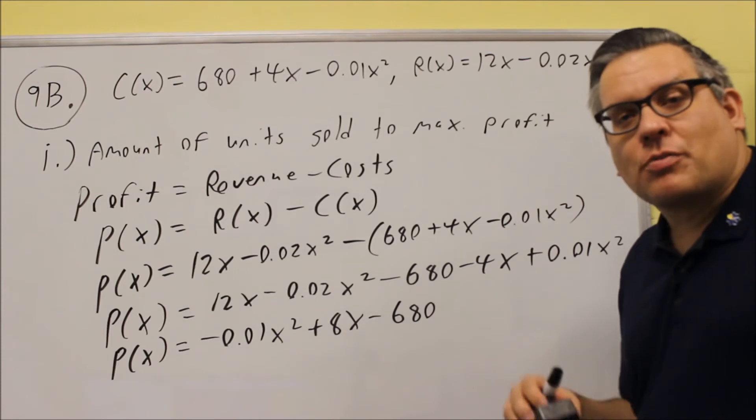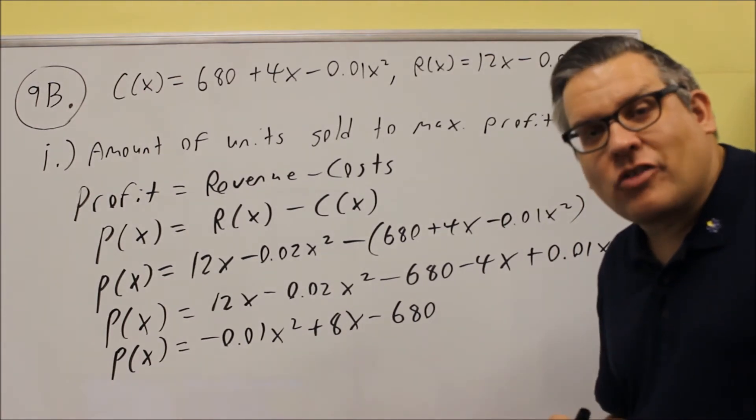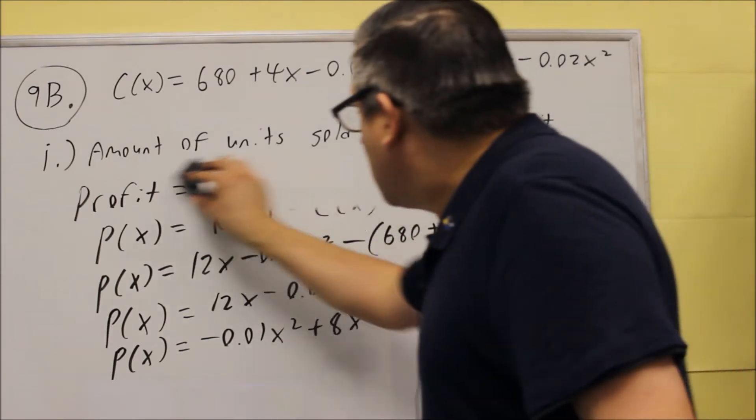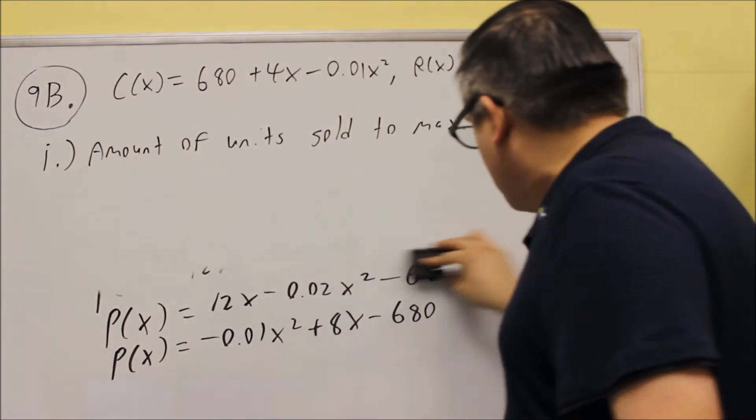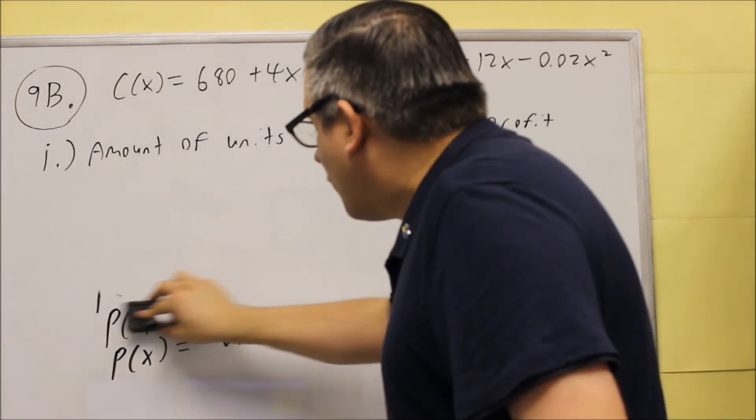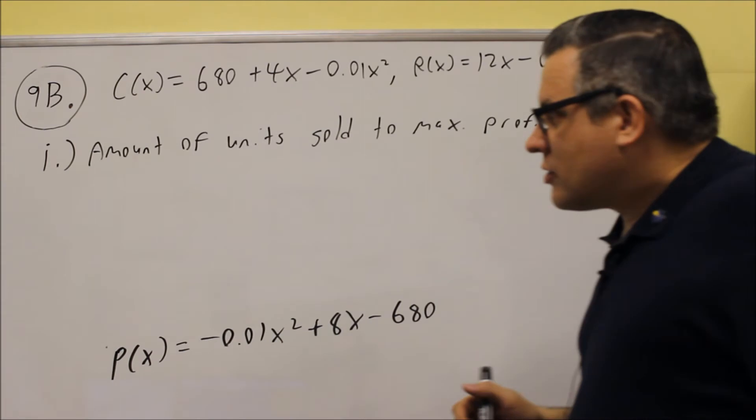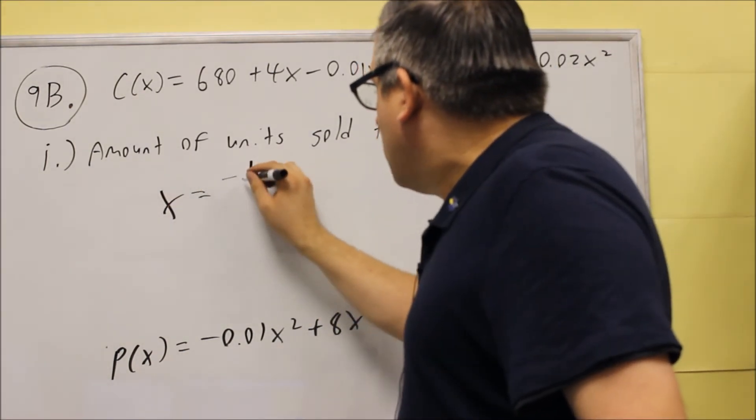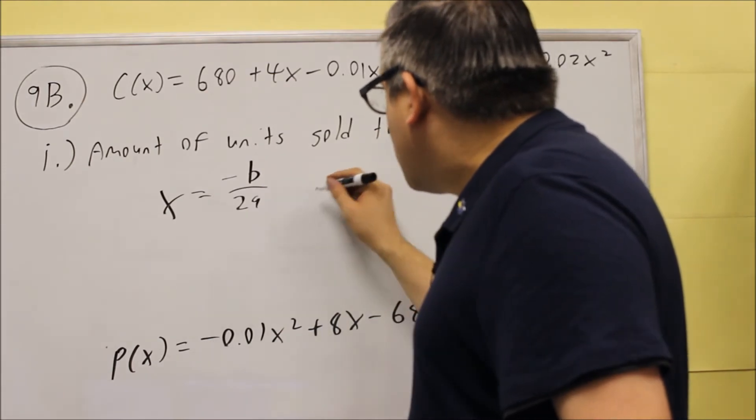And now that we have that, we need to apply the vertex formula, which is negative b over 2a. Let's erase this so we get some space here. This is your profit function we'll leave on the bottom, that's the one that we're working with. So for this one, x is equal to negative b over 2a, which in this case: